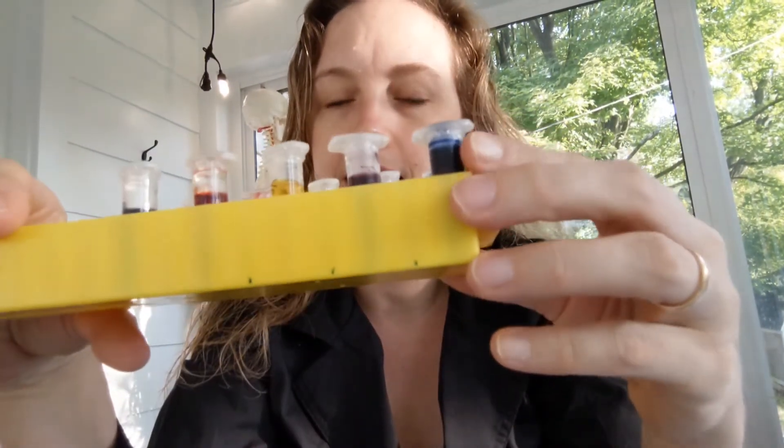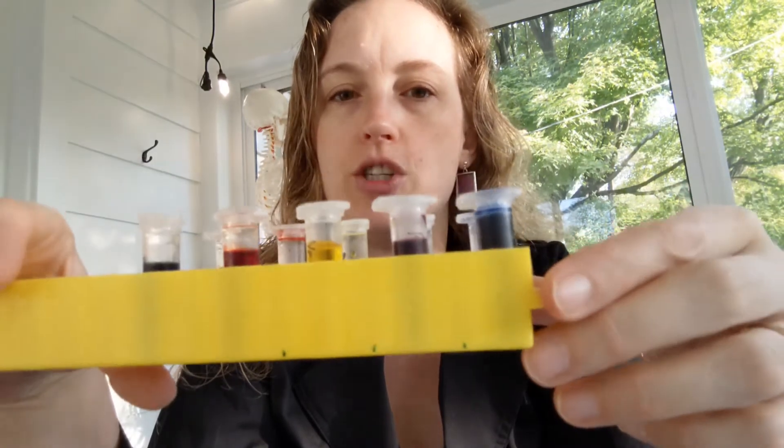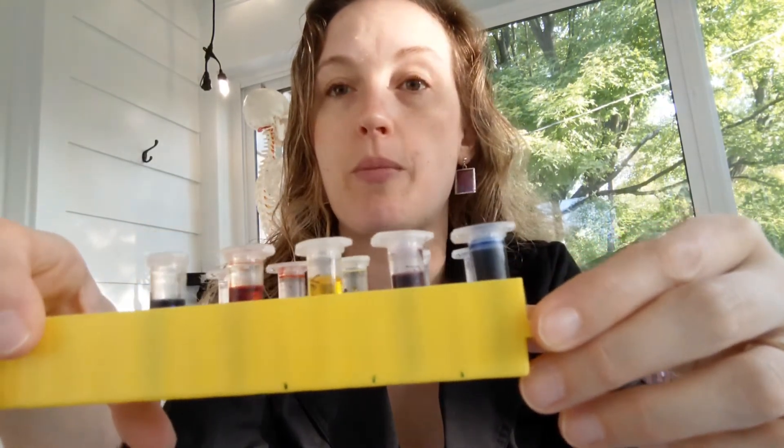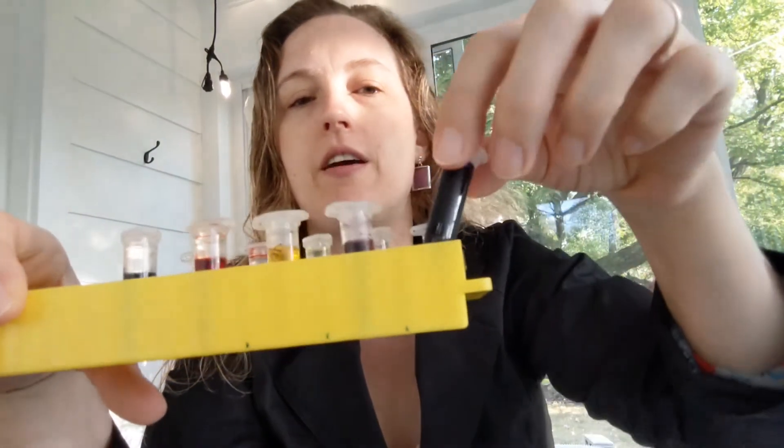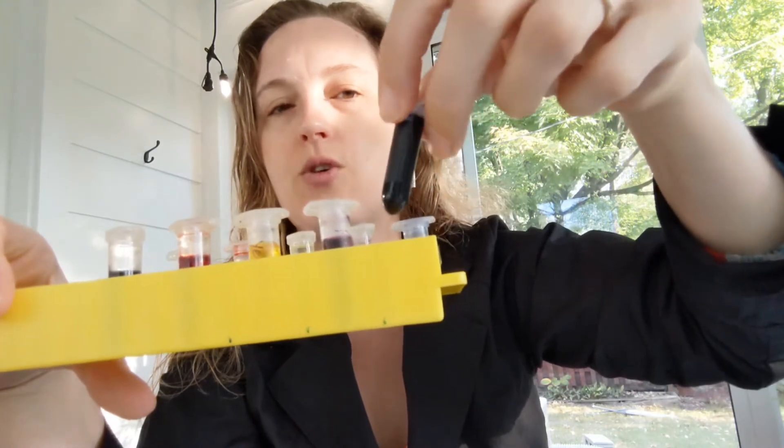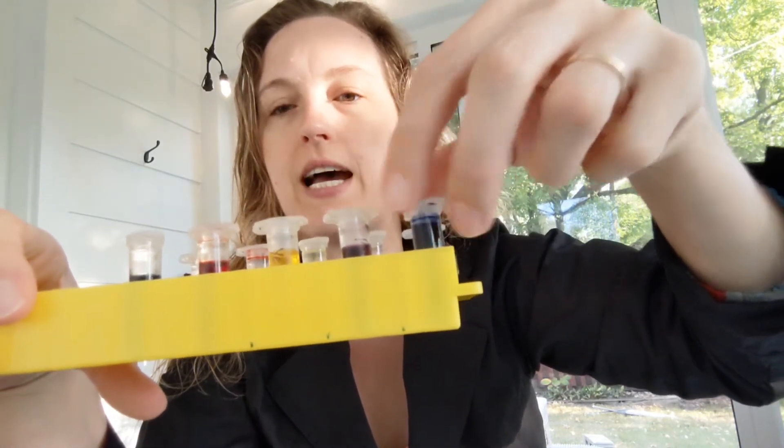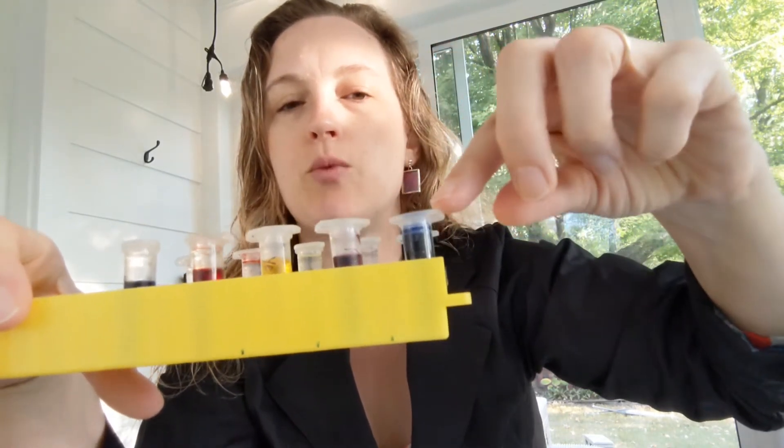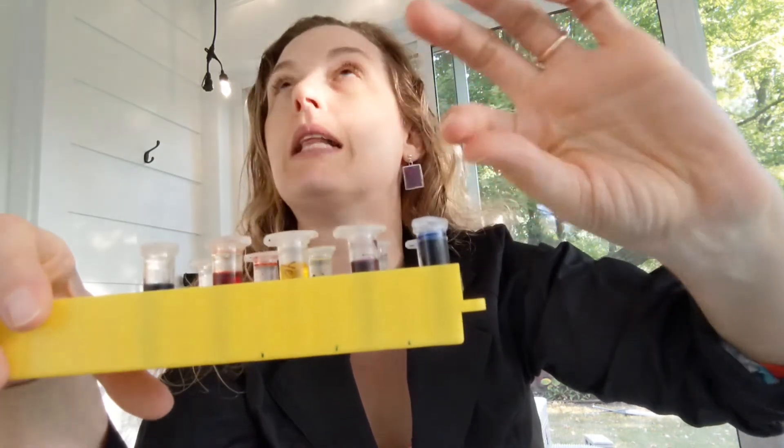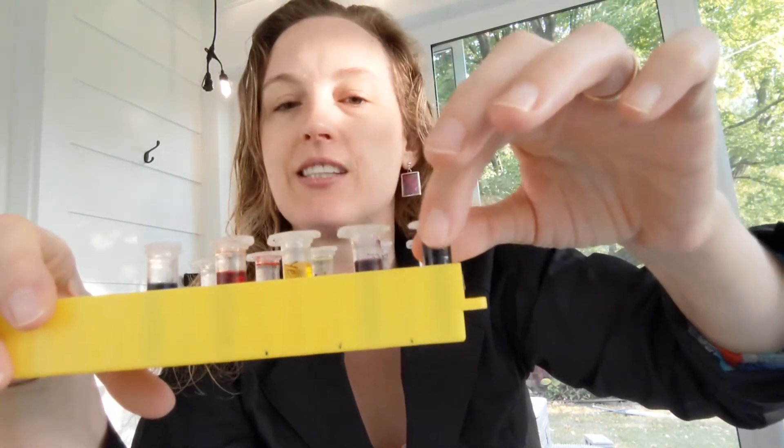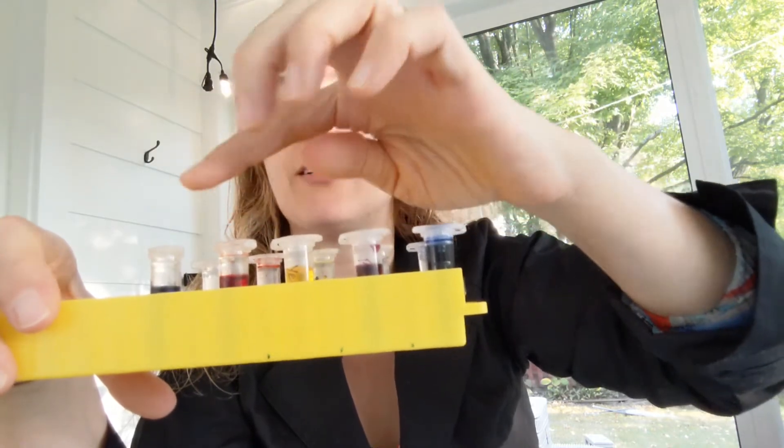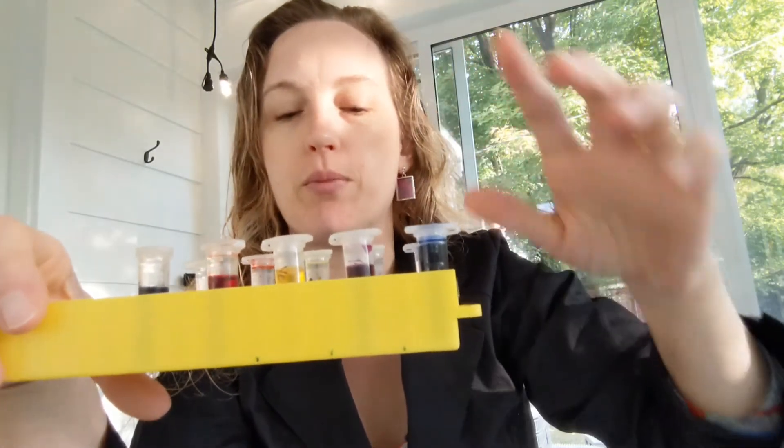You just aliquot your dyes into these. It was easy to just use a plastic graduated micropipette to save time. They're also graduated on the side. So you can estimate there's more than enough dye to fill them. Each team will need two milliliters of navy and 1.5 milliliters of blue, red, yellow, and purple.